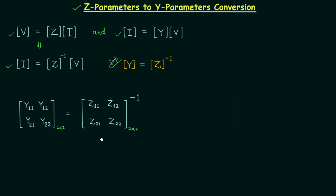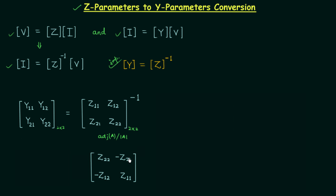The inverse of a matrix A is equal to the adjoint of the matrix divided by the determinant of the matrix, and the adjoint of the matrix is equal to the transpose of the cofactor matrix. In our case, Z11 has cofactor Z22, Z12 has cofactor minus Z21, Z21 has cofactor minus Z12, and Z22 has cofactor Z11. After replacing all elements by their respective cofactors, we take the transpose and then divide by the determinant of the matrix.